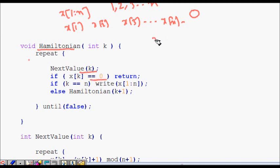then xk returns a 0. If we return some successful assignment for the kth node, then we go for Hamiltonian finding the node k plus 1.